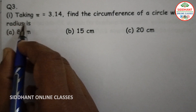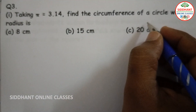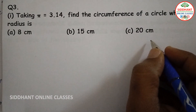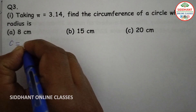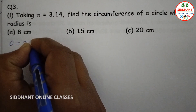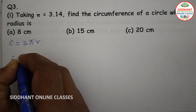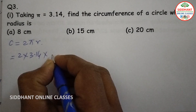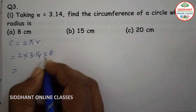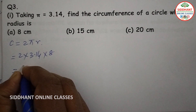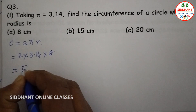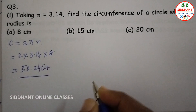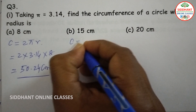Question number three: taking pi as 3.14, find the circumference of a circle whose radius is 8 centimeter, 15 centimeter, and 20 centimeter. Circumference equals 2 pi r, so 2 into 3.14 into 8 equals 16 into 3.14, which gives 50.24 centimeters.